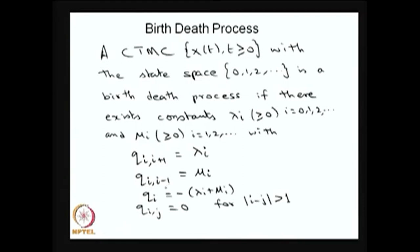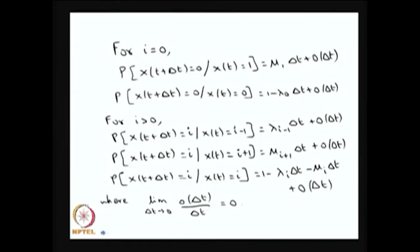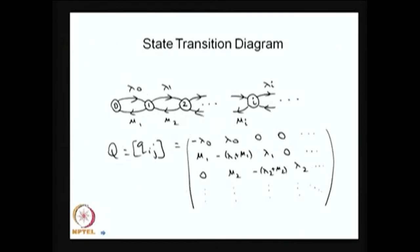Therefore, we land up with a Q matrix where: the rate from state i to i+1 (forward) is λ_i; the rate from i to i-1 (backward) is μ_i; and the rate of remaining in the same state is -(λ_i + μ_i). There is no move from one state to any other non-adjacent state — only one step forward or one step backward.